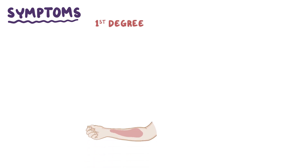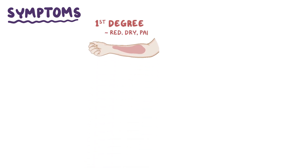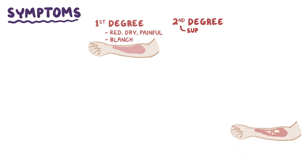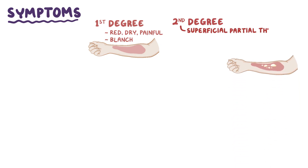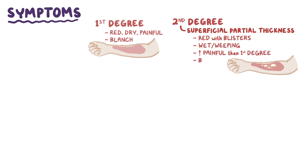Symptoms of a burn depend on the degree of the burn. In first degree, the affected area becomes red, dry, and painful. These areas also tend to blanch, turning white as blood flow is restricted with compression. Second degree superficial partial thickness burns can be red with clear blisters, wet as if they're weeping, and are even more painful than first degree burns, but still blanch.